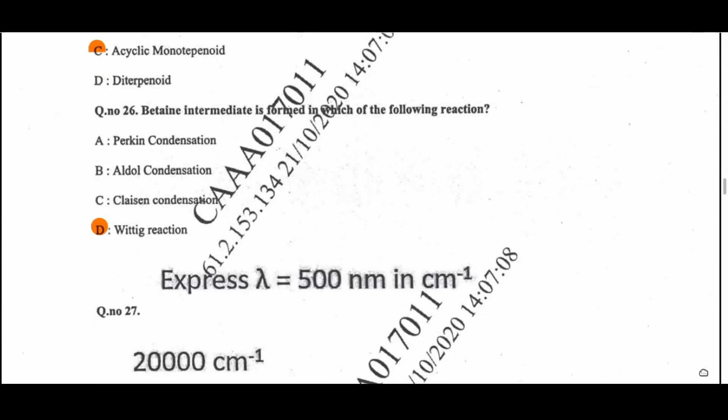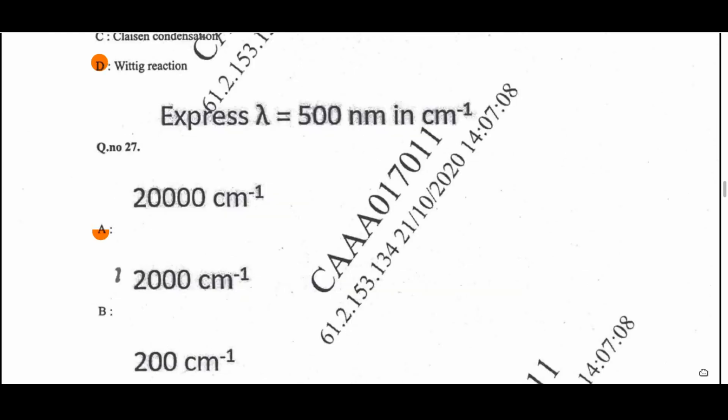Question 26: In which reaction is the betaine intermediate formed? That is the Wittig reaction — two opposite charges come together in an intermediate and a four-membered ring is formed. Question 27: Express lambda = 500 nanometers in cm⁻¹. After converting to centimeters and taking the inverse, the answer is option A: 20,000 cm⁻¹.